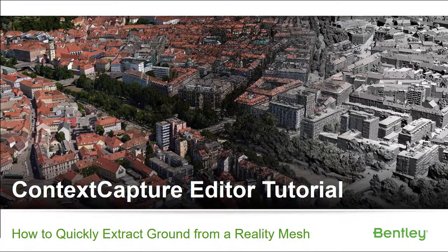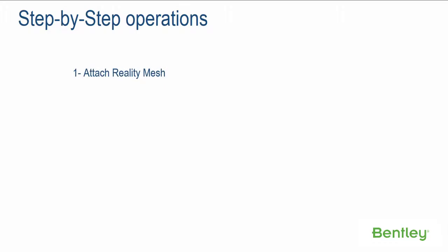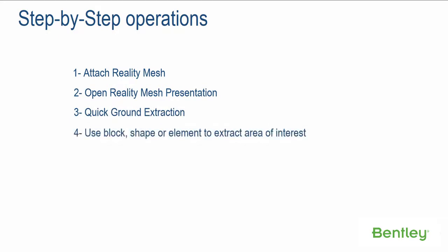Context Capture Editor Tutorial: How to quickly extract ground from a reality mesh. Step-by-step operations. Step 1: Attach reality mesh. Step 2: Open reality mesh presentation. Step 3: Access quick ground extraction. Step 4: Use block, shape, or element to extract area of interest. Step 5: Manage, modify, export ground features.